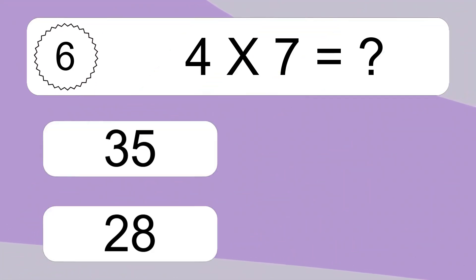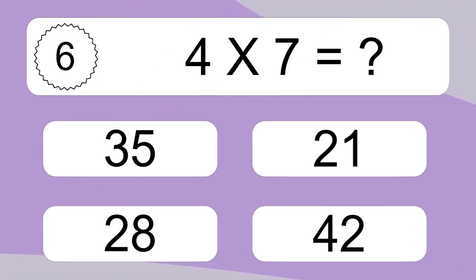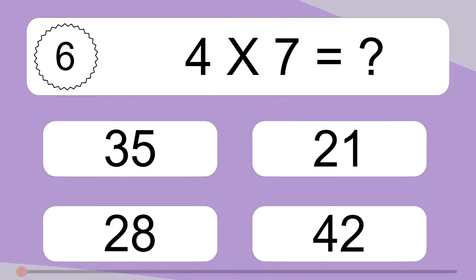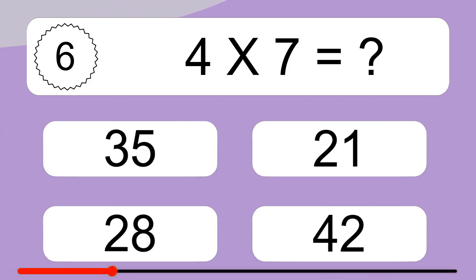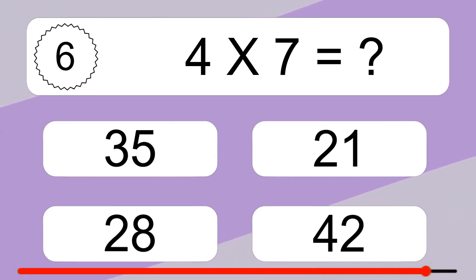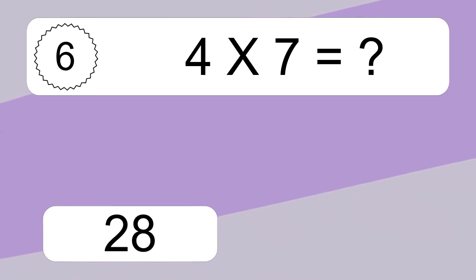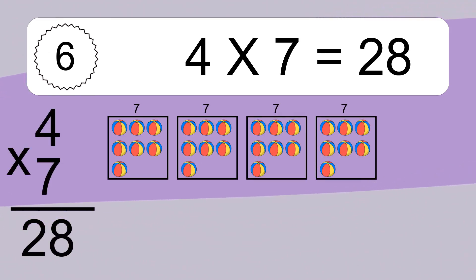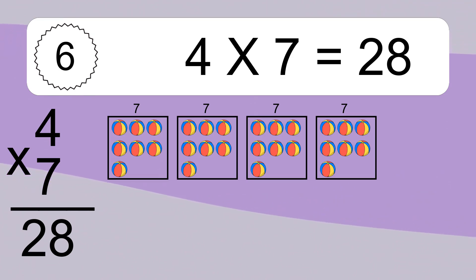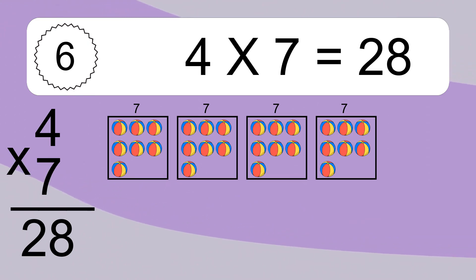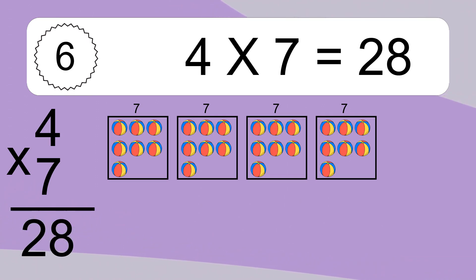4 times 7 equals what? 4 times 7 equals 28. We have 4 boxes, and each box has 7 colorful balls inside. If you count all the balls in all the boxes together, you will have 4 times 7 balls. This equals 28 balls.